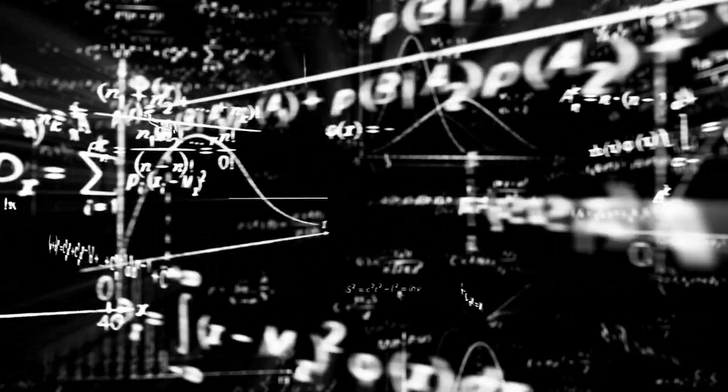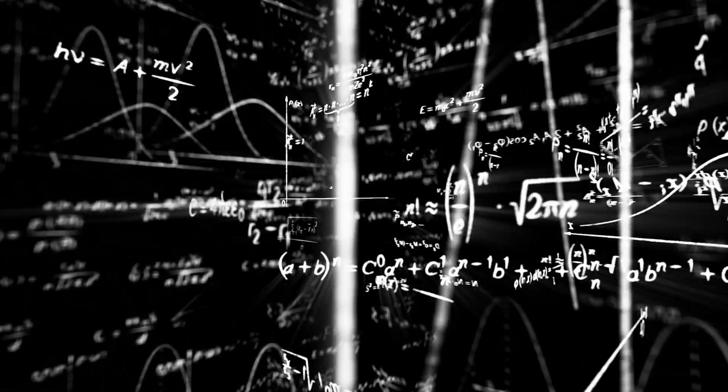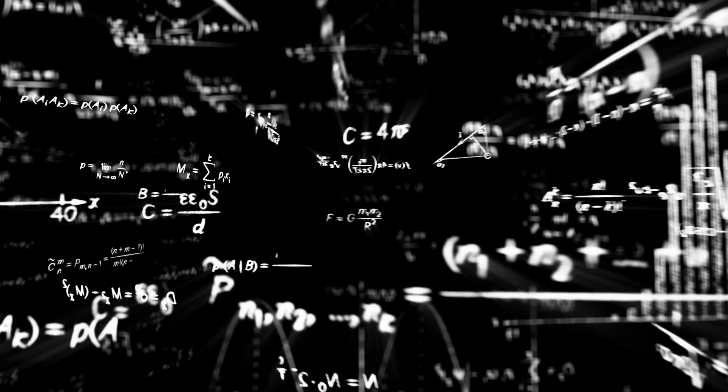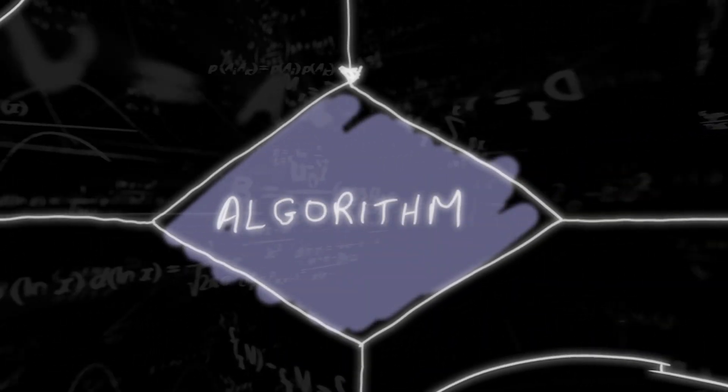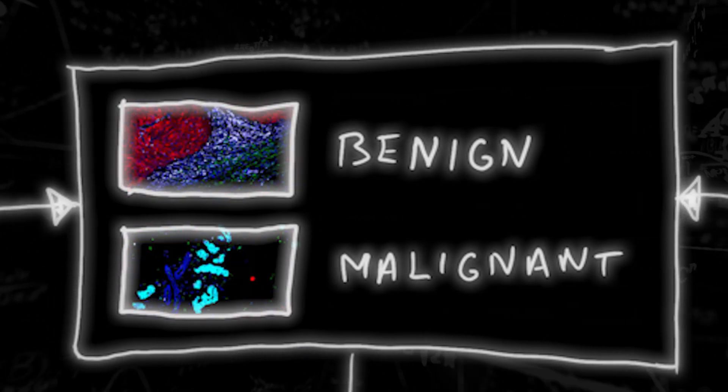For example, sophisticated algorithms can help physicians get better at diagnosing diseases like melanoma. To do this, researchers train an algorithm by showing it images of benign and malignant tumors and telling it which is which.